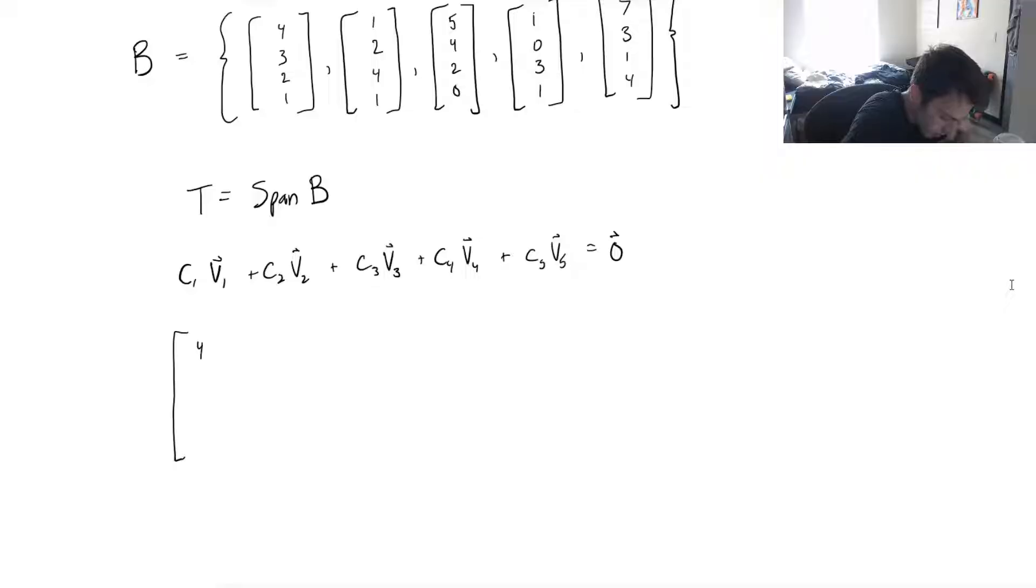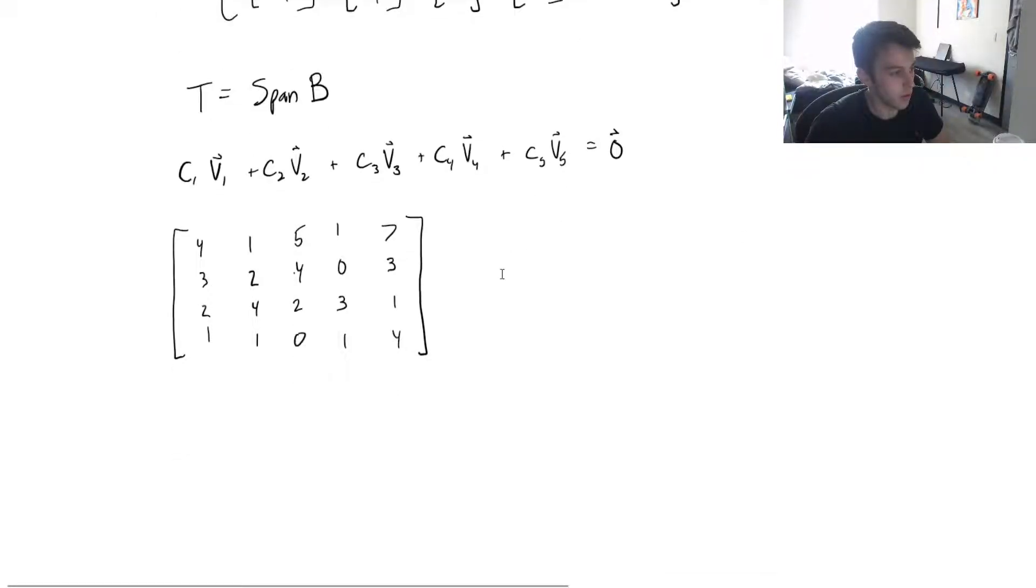And that will leave me with, well, that'll be 4,3,2,1 in the first column, 1,2,4,1, 5,4,2,0, 1,0,3,1, 7,3,1,4. And it's a homogeneous system. All of those equations equals 0 on that augmented part, which will not affect how we row reduce. So if we were to row reduce this, which I'm not going to go through the trouble of doing that because it's not the point of this video.